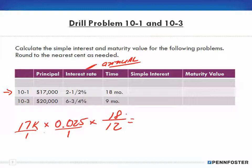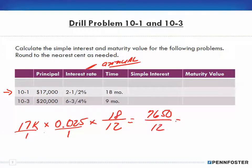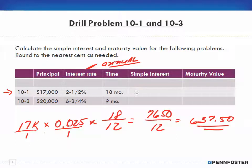I take 17,000 times 0.025 times 18, which gives me 7,650. Across the denominators, 1 × 1 × 12 = 12. Dividing 7,650 by 12 gives me $637.50 as my simple interest.